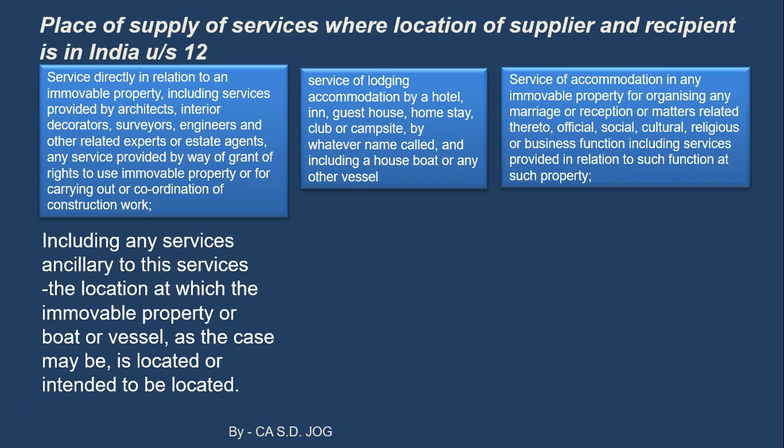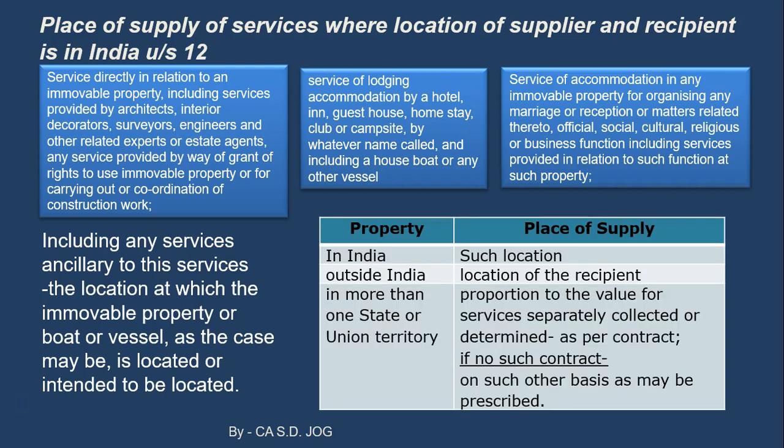There is one important technical part: if the immovable property is situated in India, then such location will be the place of supply. For example, if the property for which the architect is providing services is in Mumbai, then Mumbai is the place of supply. But if the property is located outside India, then the location of the recipient becomes the place of supply. For example, if a person is constructing a bungalow in Dubai and has hired an architect in Mumbai, the place of supply will still be the location of the recipient, i.e., Mumbai.